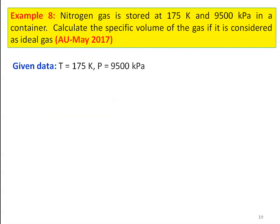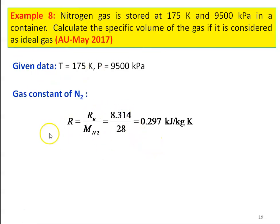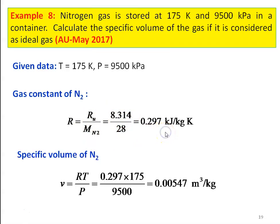Example number 8 from the May 2017 question paper: nitrogen gas stored at 175 Kelvin, 9,500 kilo Pascal in a container. Calculate the specific volume of the gas if it is considered as ideal gas. Temperature T equal to 175 Kelvin, pressure P equal to 9,500 kilo Pascal. Gas constant of nitrogen R equal to 8.314 divided by 28 equal to 0.297 kilo joules per kilogram Kelvin. Specific volume of nitrogen v equal to RT by P: 0.297 into 175 divided by 9,500 equal to 0.00547 meter cube per kilogram. That is the answer to the problem.